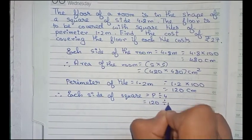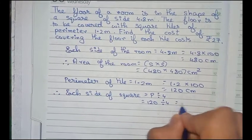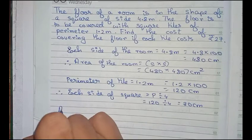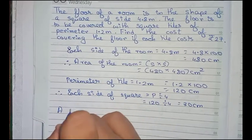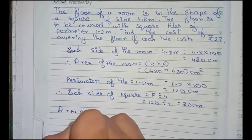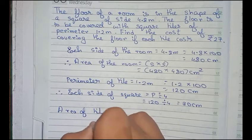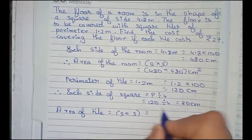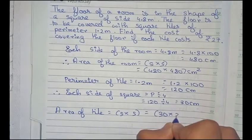Now finding the area of tile: area of tile equals side into side, equals 30 into 30 centimeter square.